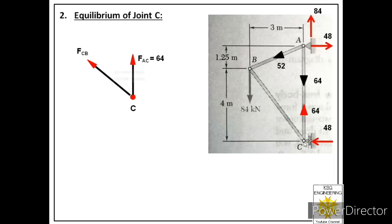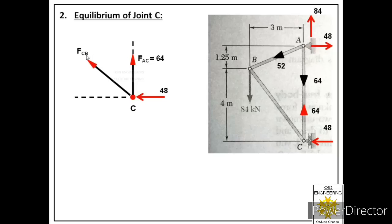There is no external force at joint C, but there is a reaction of 48 kN acting towards the left. Label that reaction. There is one inclined force (FCB) to resolve into components. From the origin draw dashed lines along X and Y. The direction of both components is away from the joint, matching the direction of the force itself.